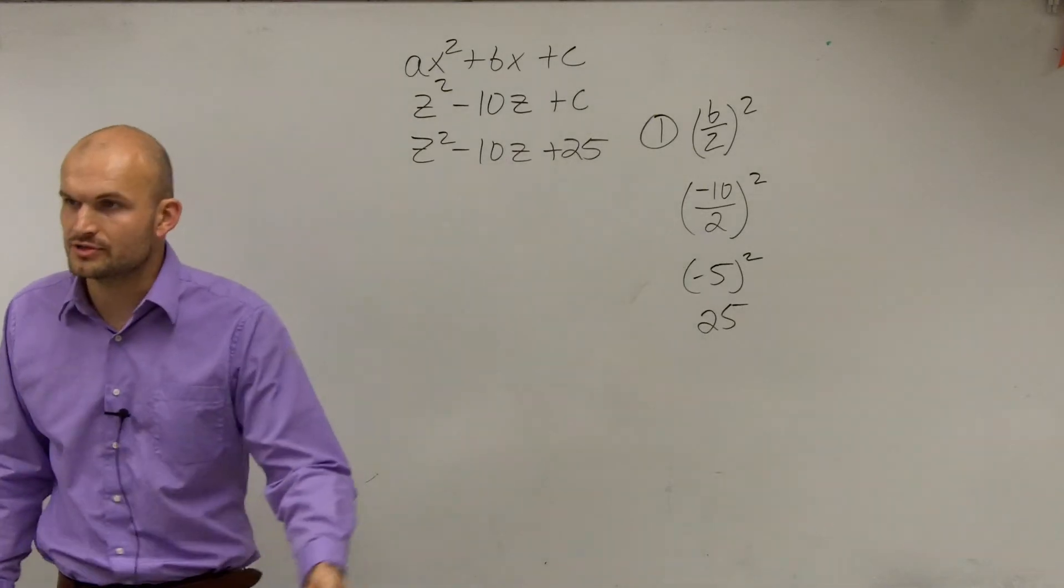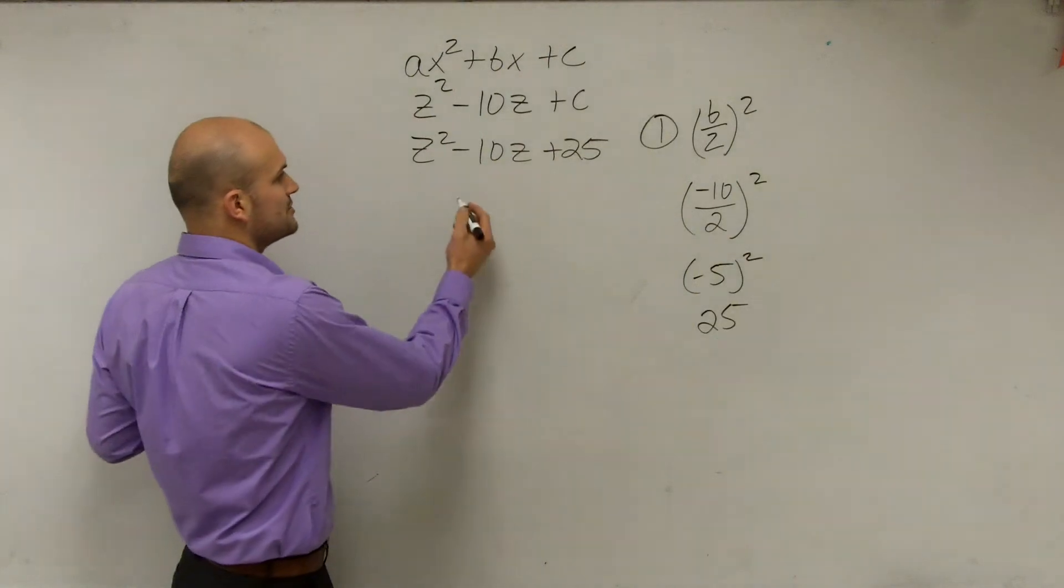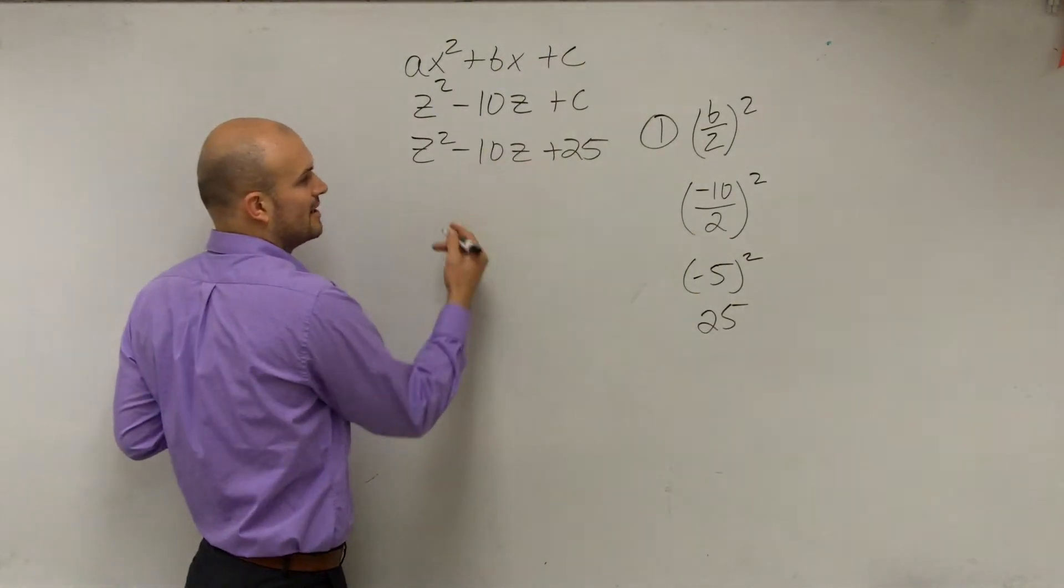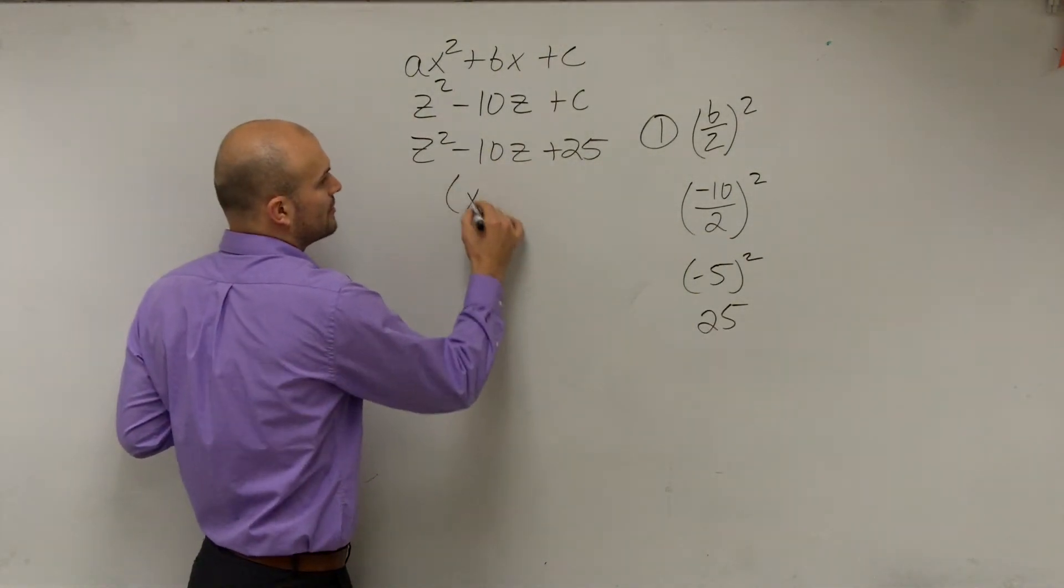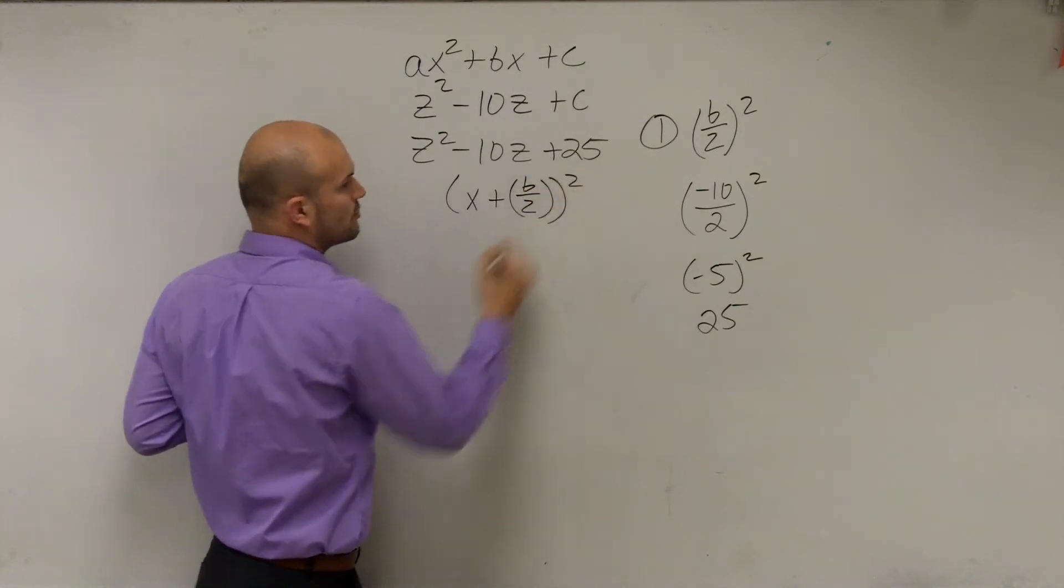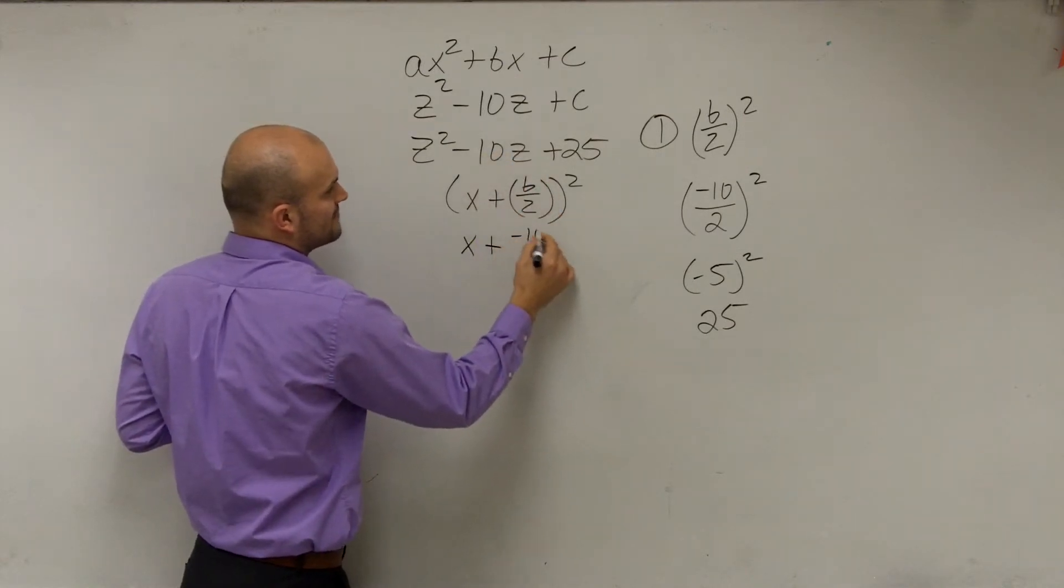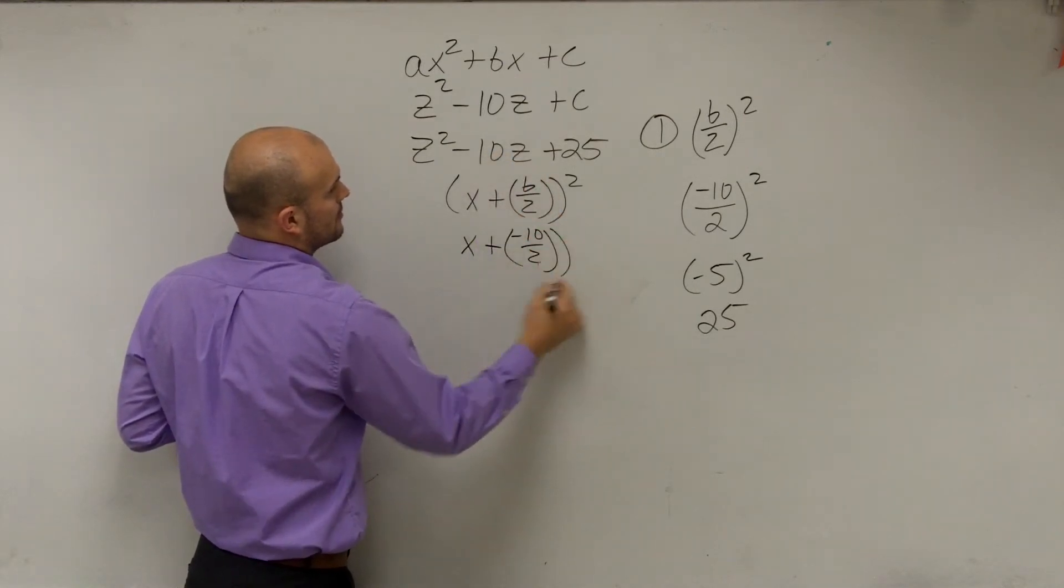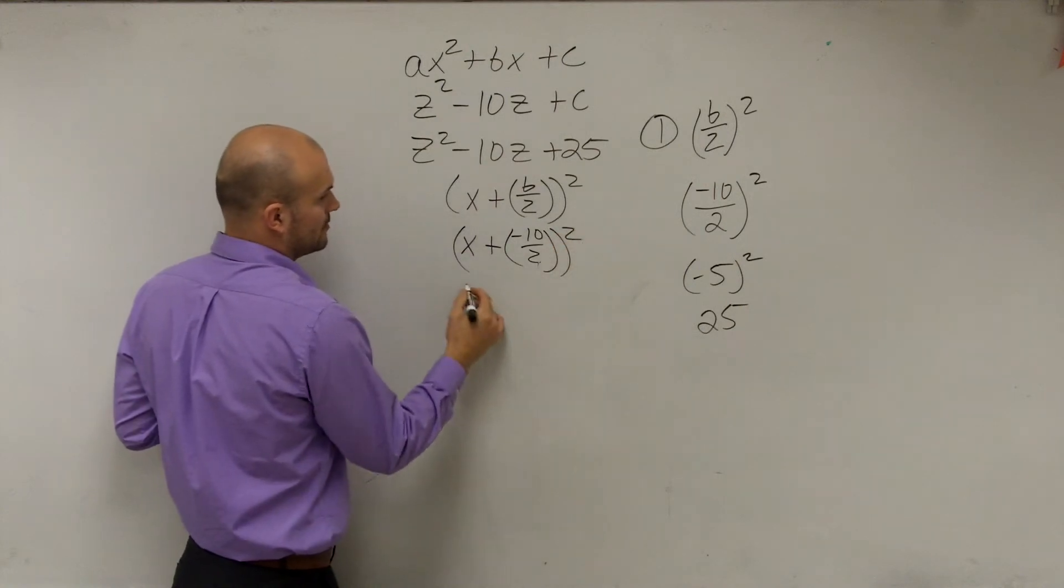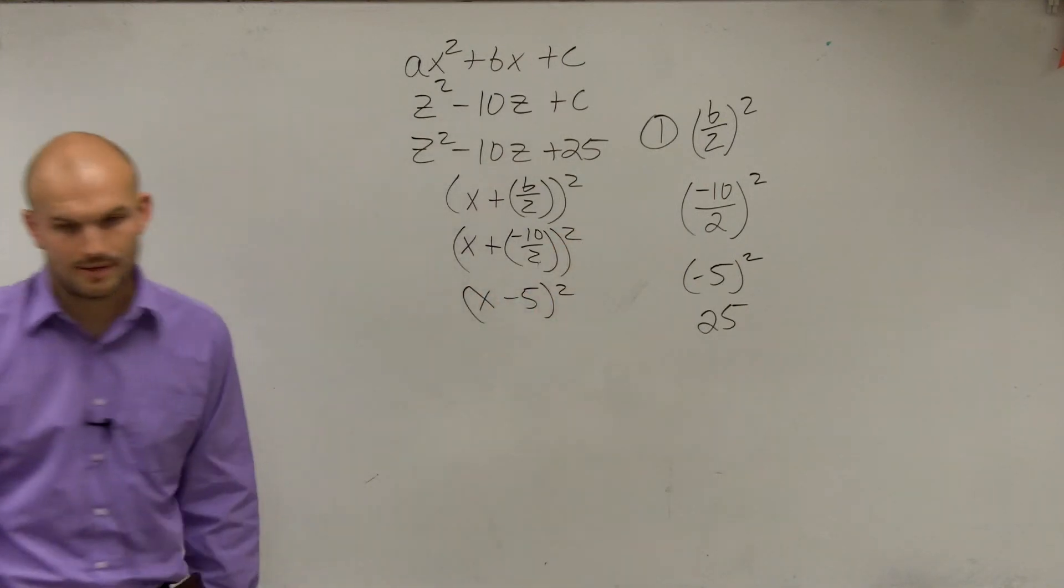And the reason why we want a perfect square trinomial is because what we're going to do, if you remember, the next step is to write it as a binomial squared. We do x plus b divided by 2 and then square it. So the next step you do is the x plus our b, which is negative 10, divided by 2, squared equals x minus 5 squared.